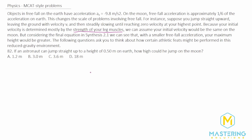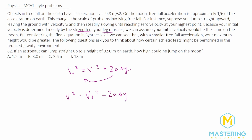To approach this, we first need to figure out how fast he can jump on the Earth so we can use that same initial velocity on the Moon. We don't have any time given, so the kinematic equation we'll be using is v final squared equals v initial squared plus 2a delta y. We want to isolate the initial velocity, so we subtract 2a delta y from both sides, giving us v_i squared equals v final squared minus 2a delta y. Taking the square root of both sides: velocity initial equals the square root of v final squared minus 2a delta y.